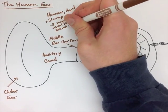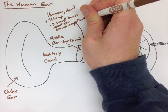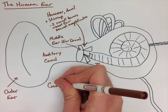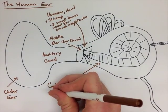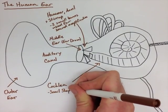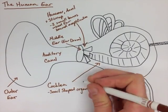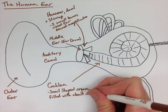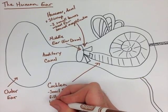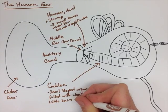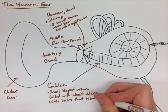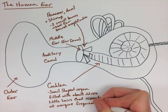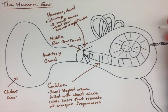Now these three bones make a vibration in the cochlea. This is a snail-shaped organ that's filled with about 22,000 little hairs that resonate at unique frequencies. This is what sends the sound down our ear. We then have the auditory nerve, and this takes the signal from the cochlea and sends it to the brain. This is what allows us to hear.